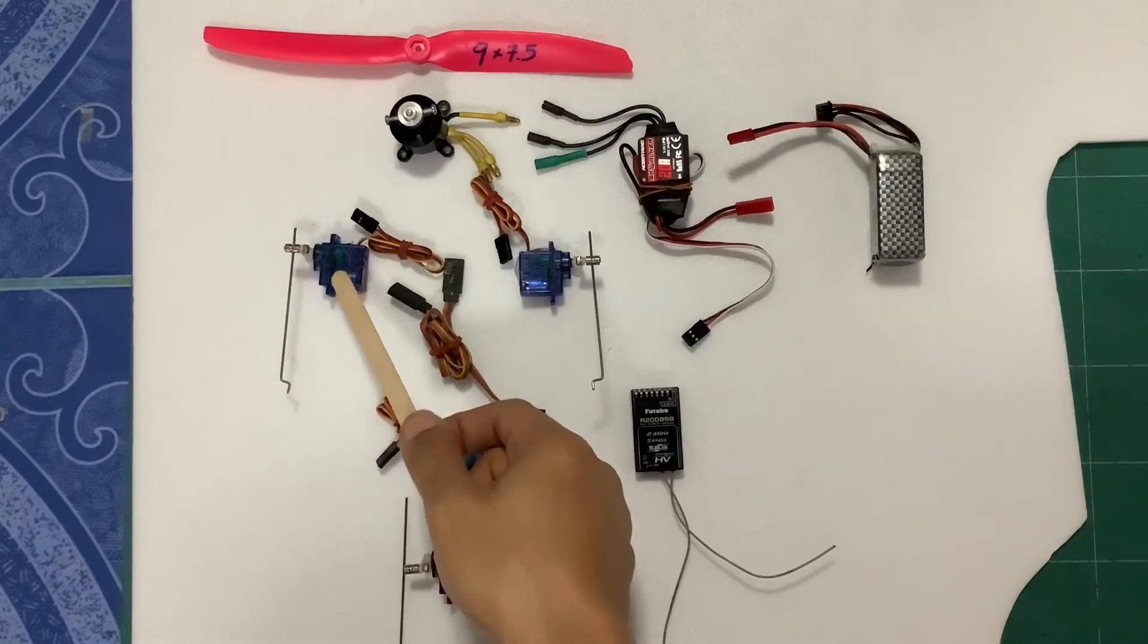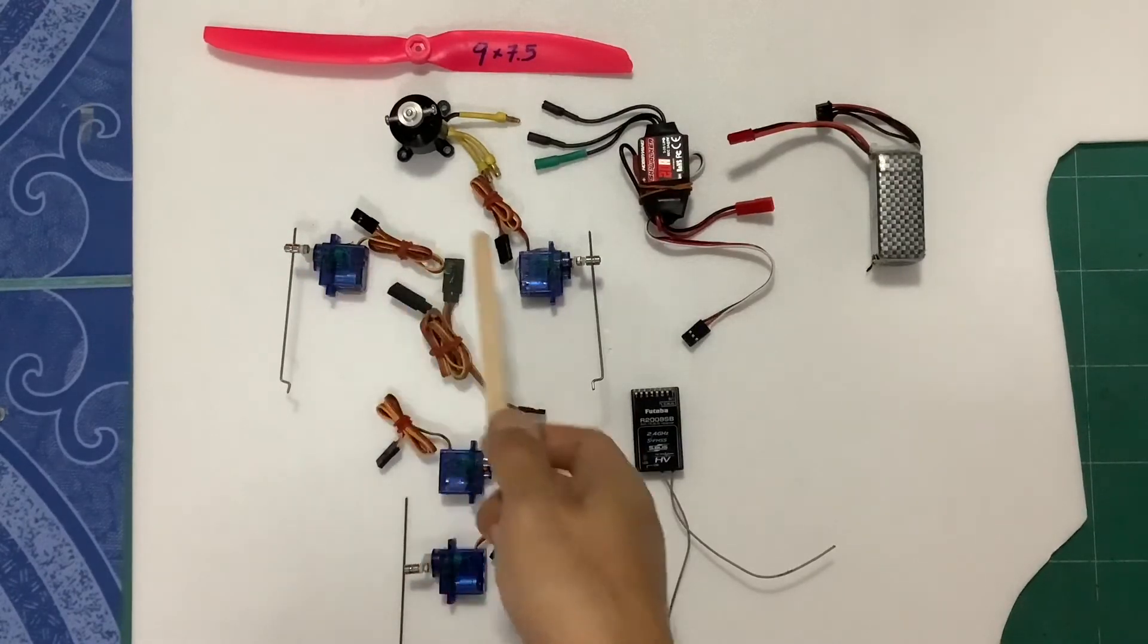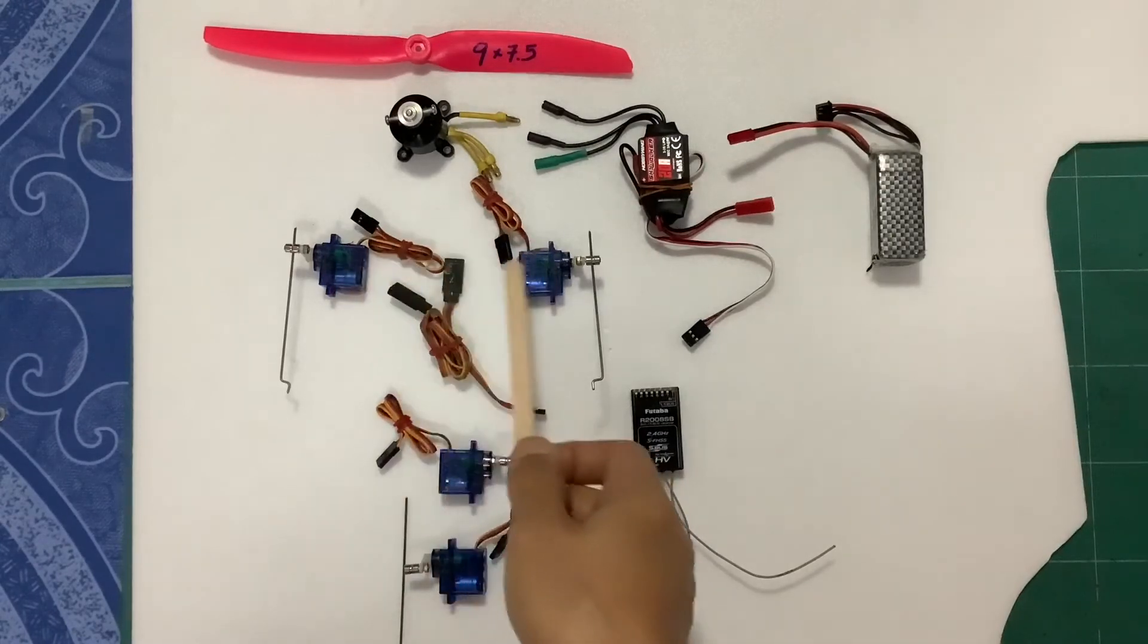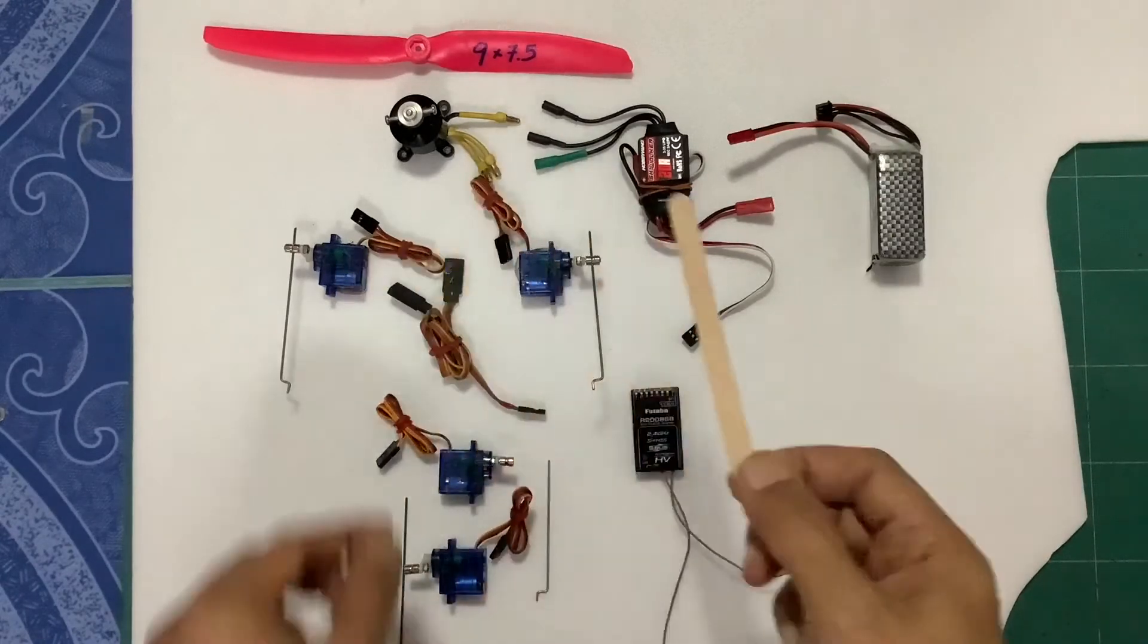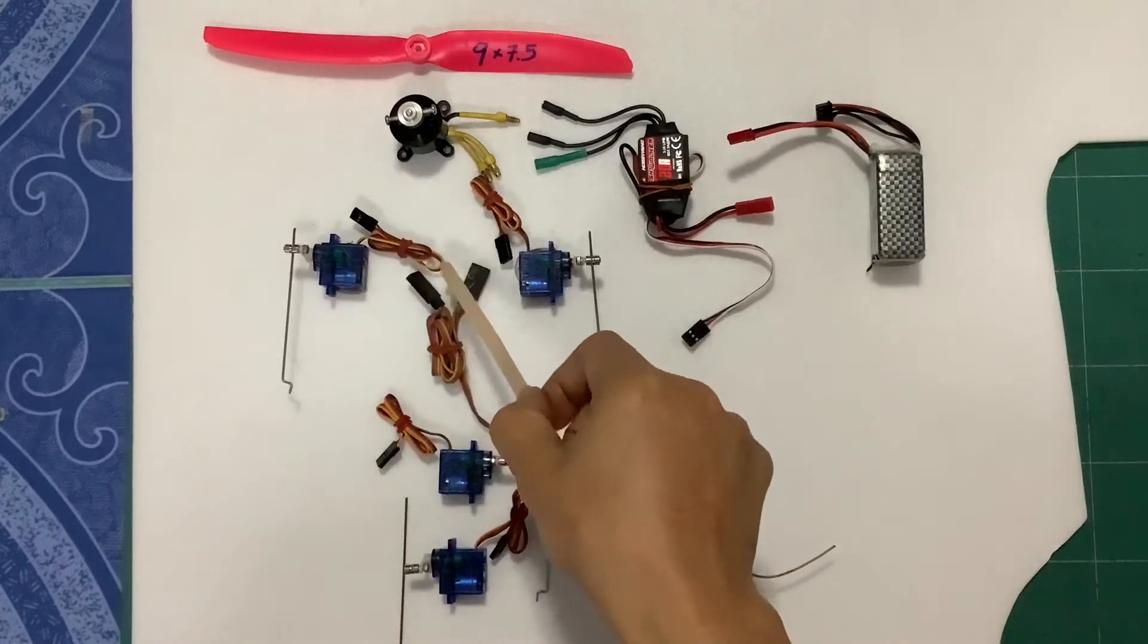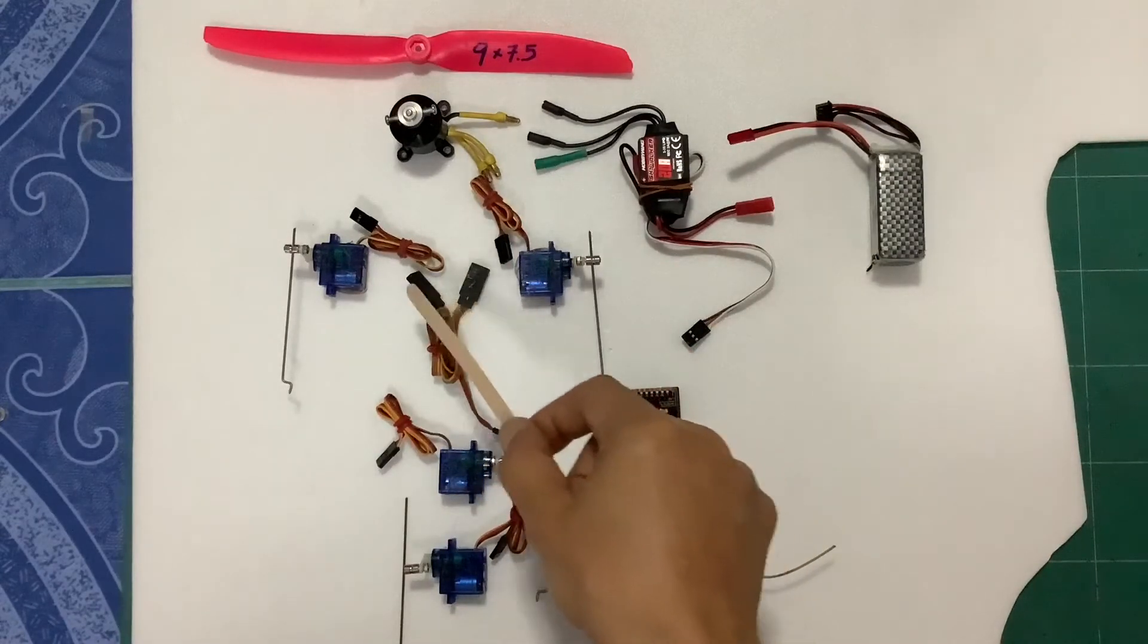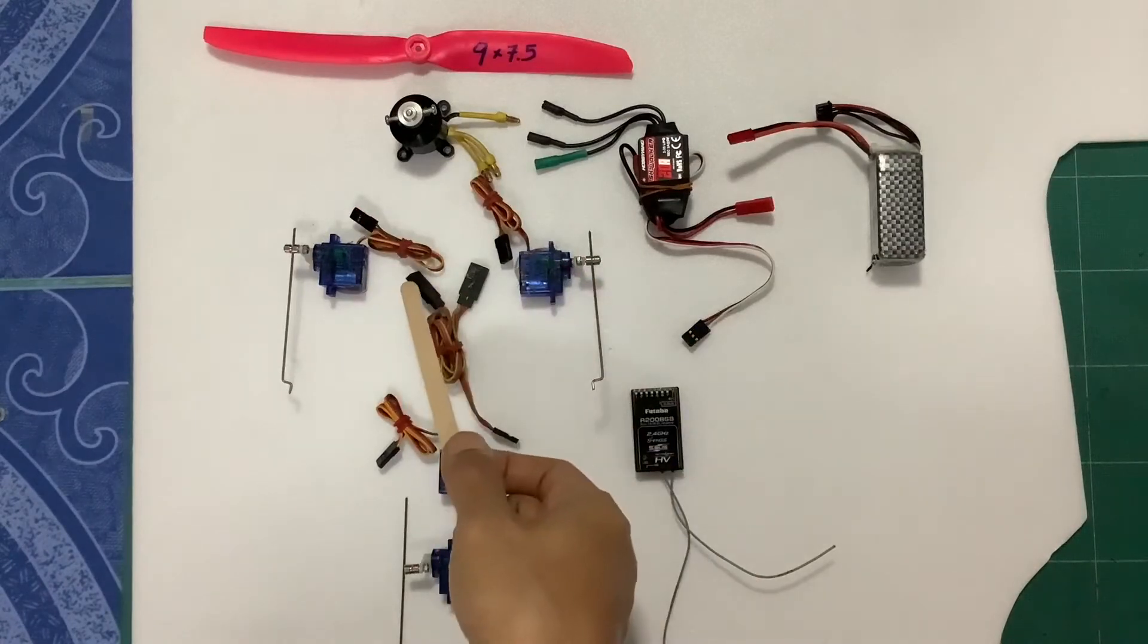This is the servo for control the aileron left, aileron right. We will connect with this cable. I call Y cable. We will connect from this one to this plug.